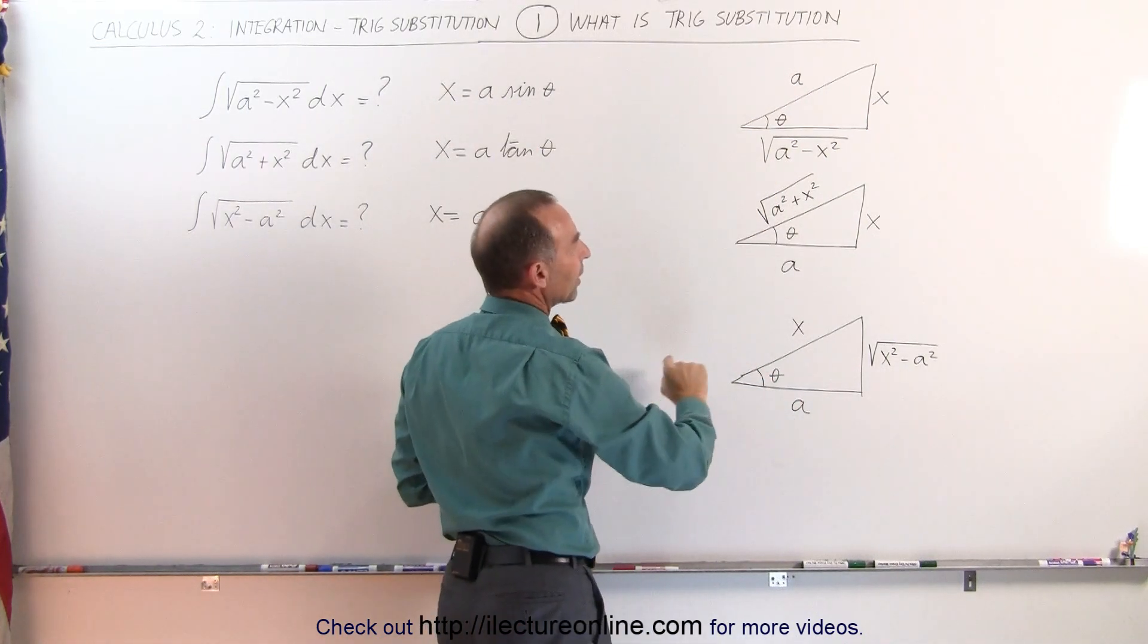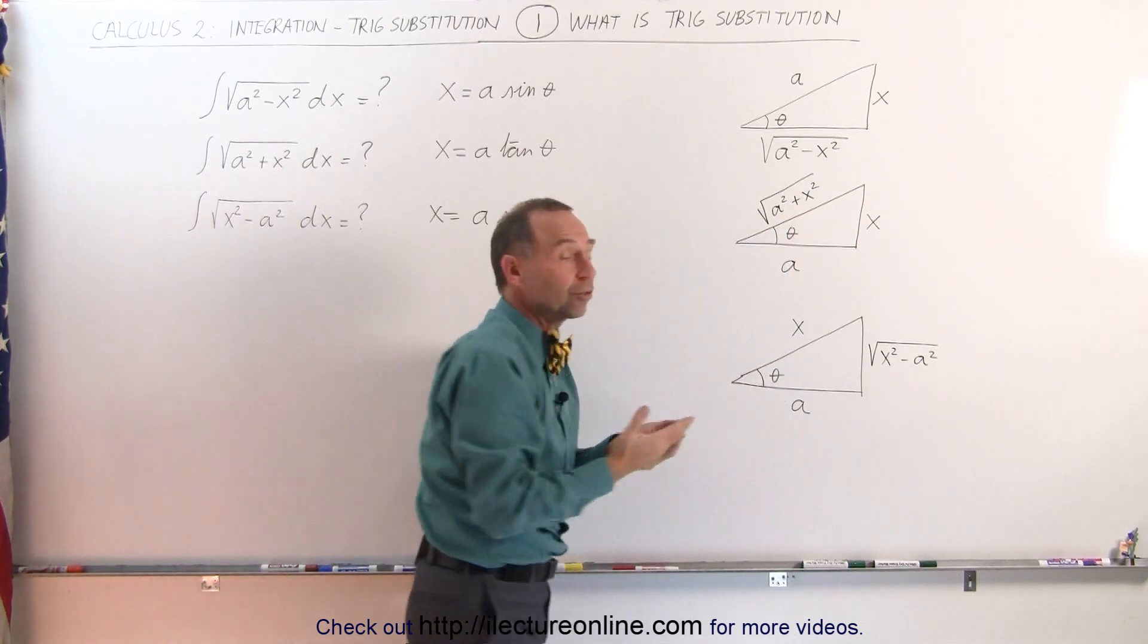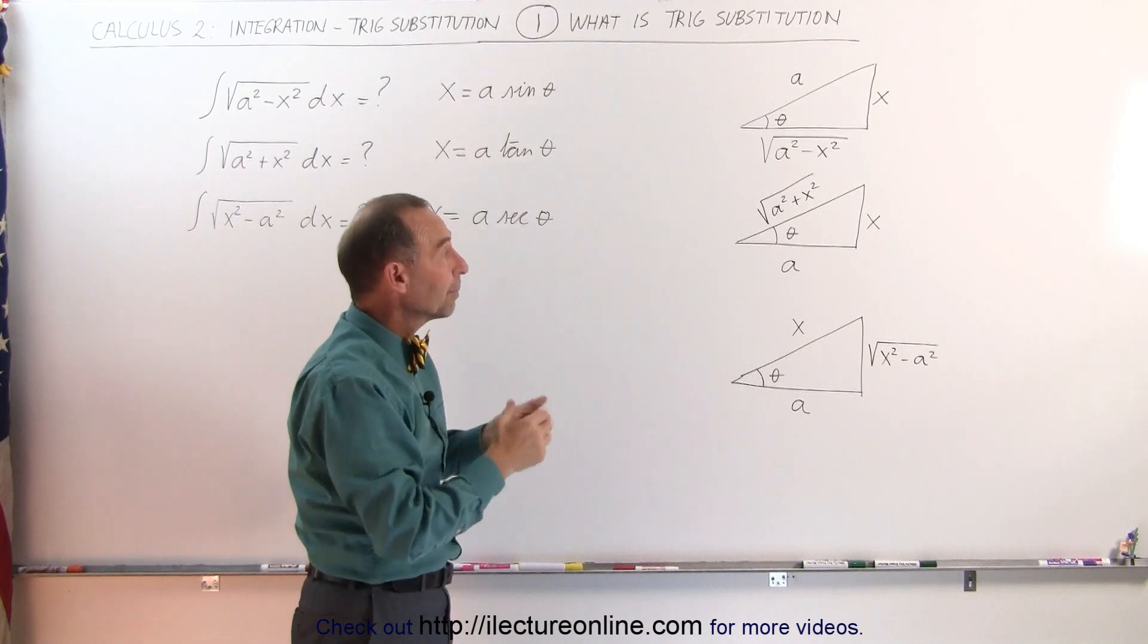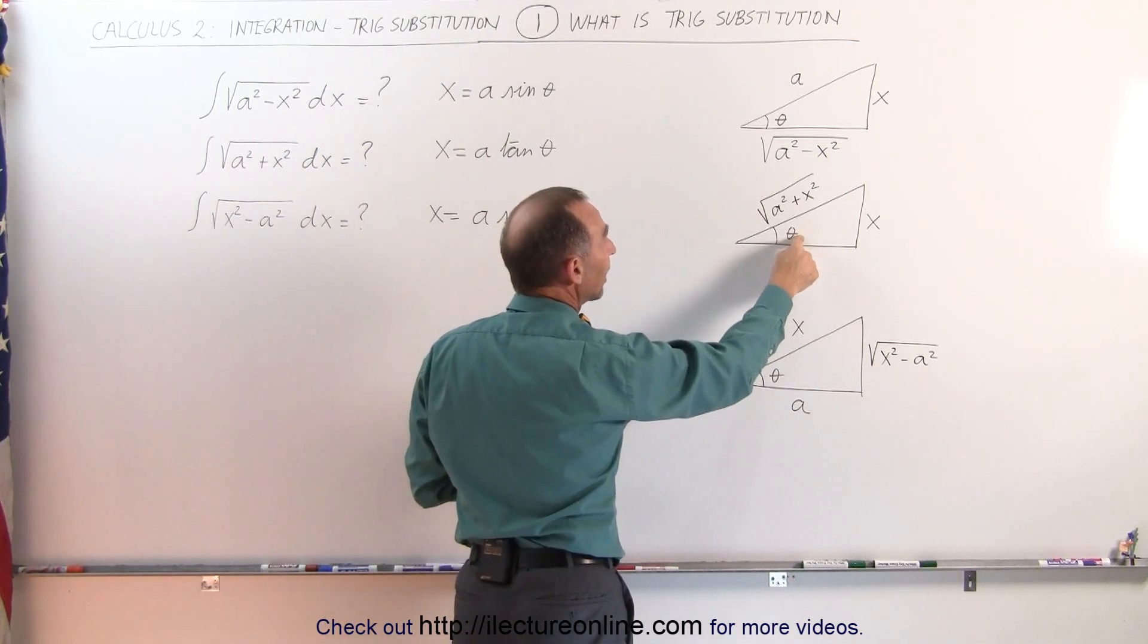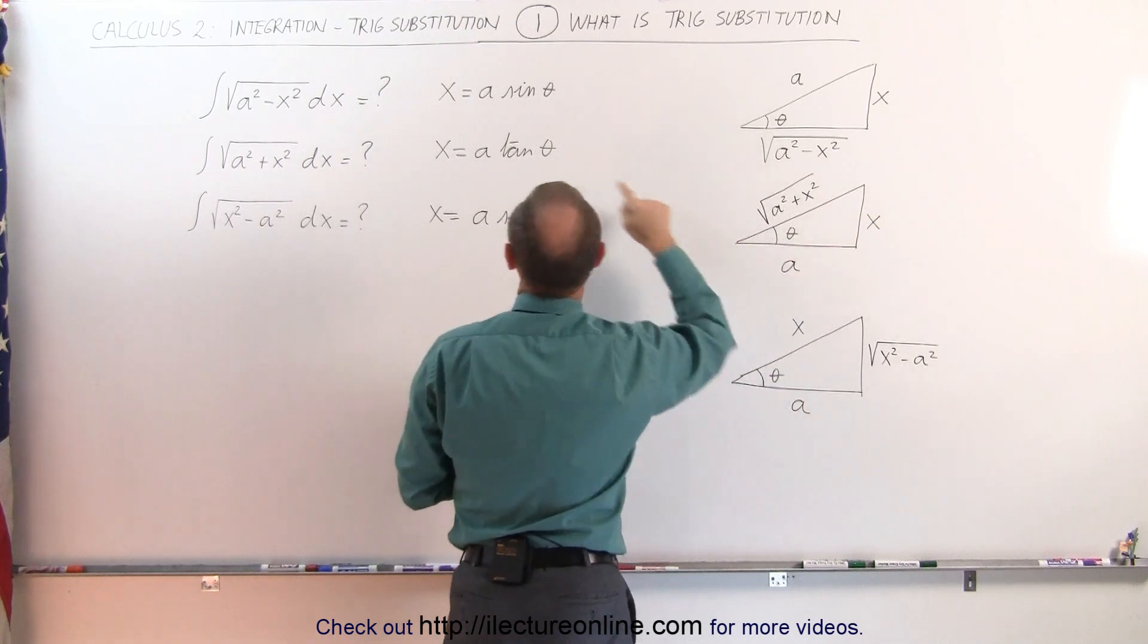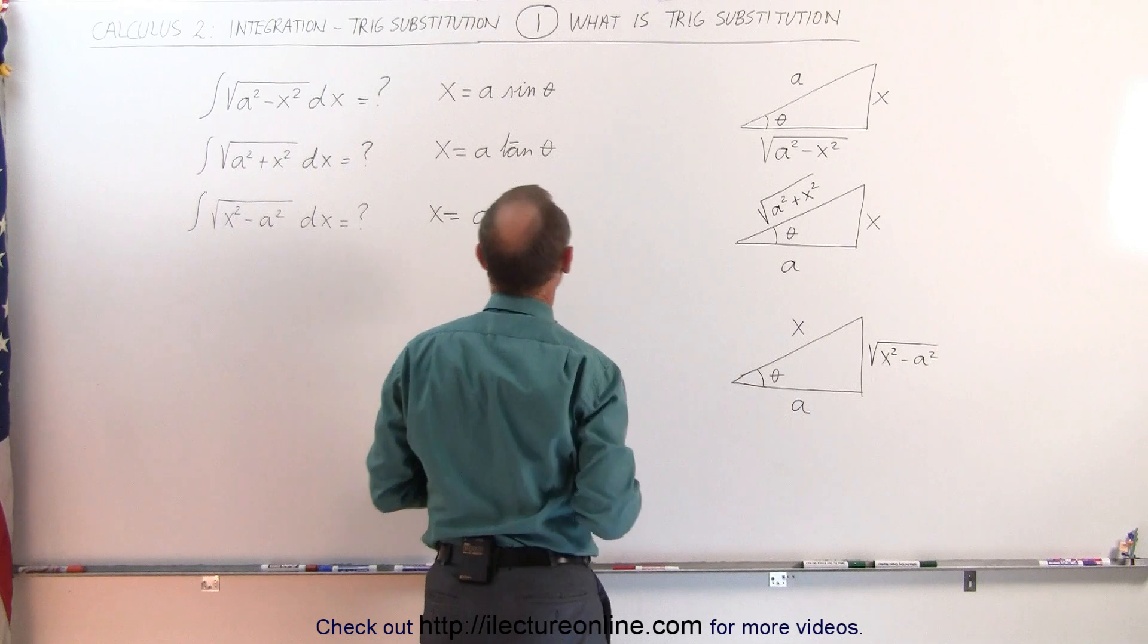On the second triangle we'll let a be this side, x be that side, and then the hypotenuse is simply the square root of x squared plus a squared, and that is again Pythagorean theorem. Notice that by definition the tangent of this angle is x over a, which is what we find here. The tangent of theta is x divided by a when we plug the a over there.